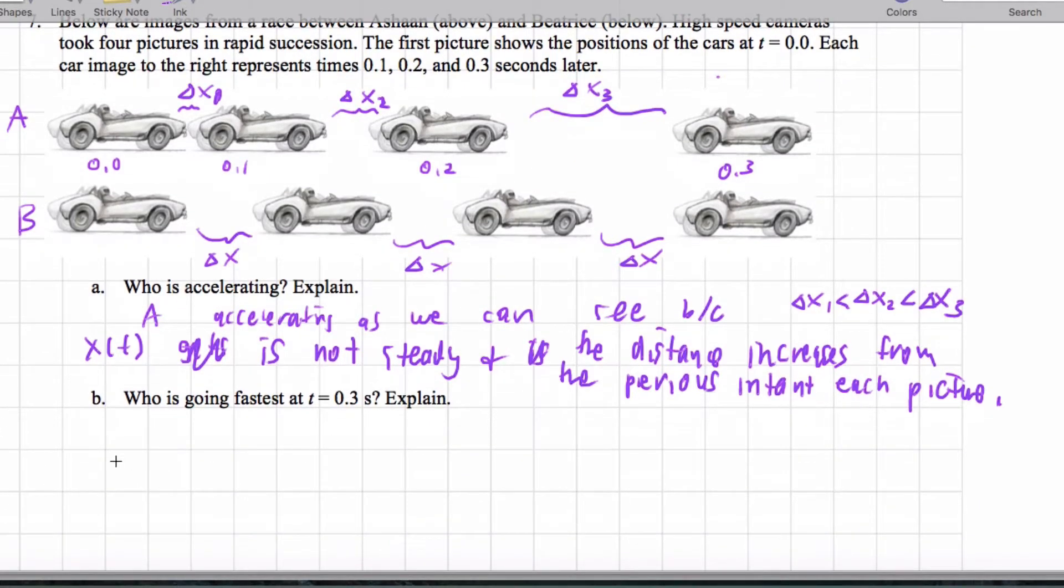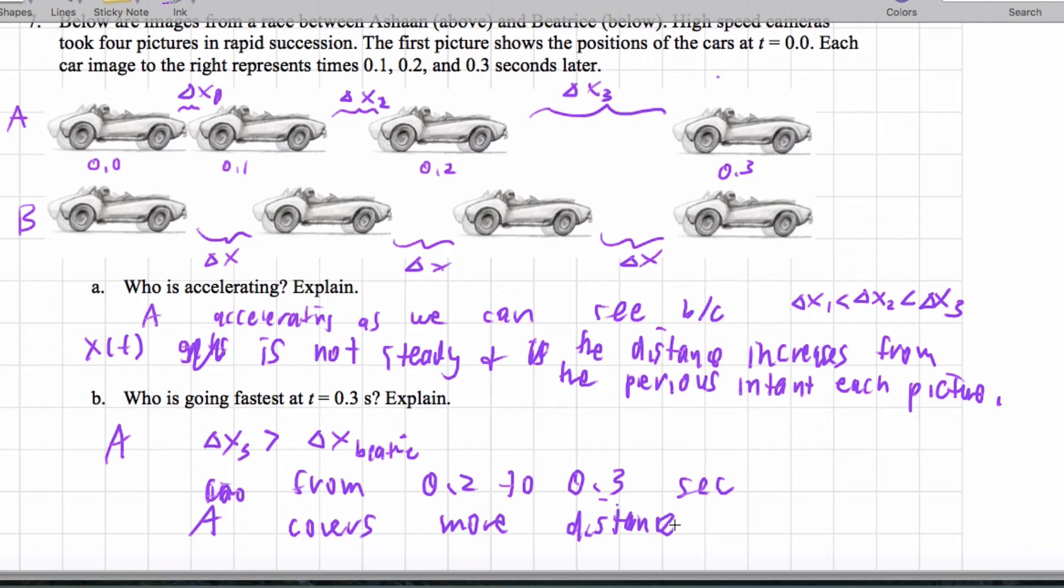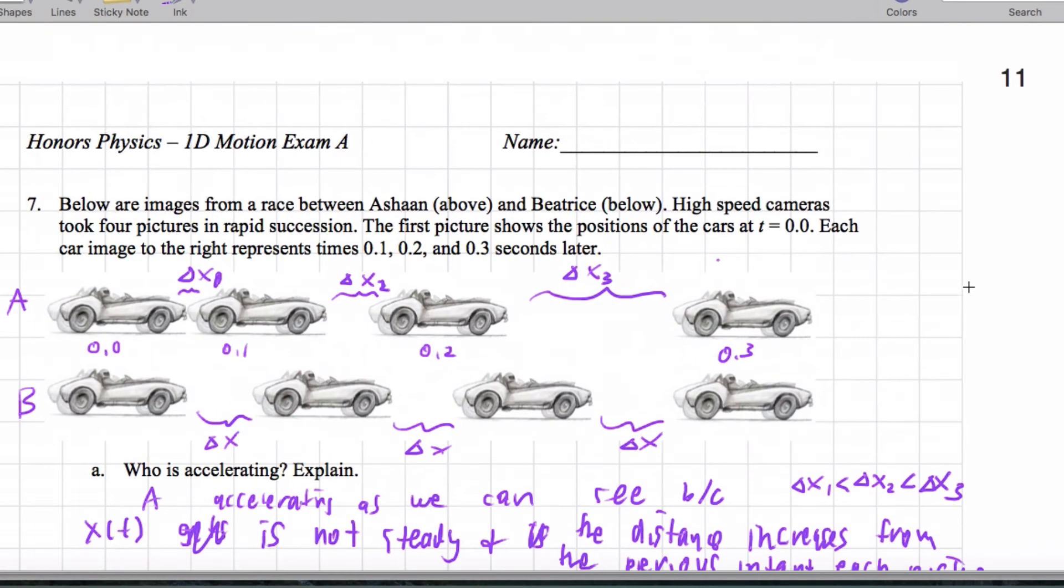Now, at t equals 0.3, Ashan is going faster. We know that because delta x3 is greater than delta x for Beatrice. And another way we can say that is that from 0.2 to 0.3 seconds, Ashan covers more distance.